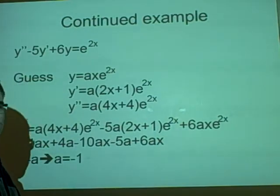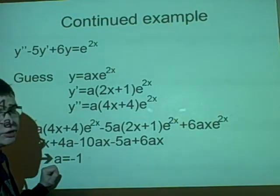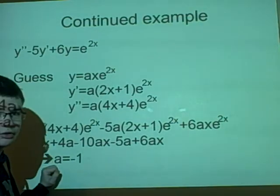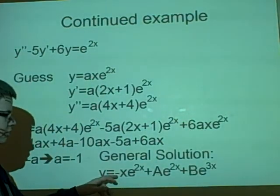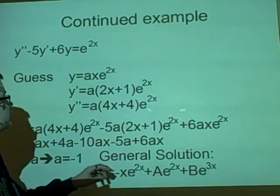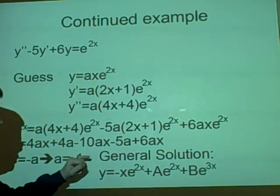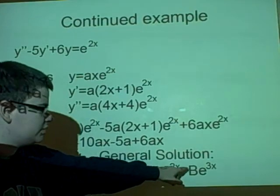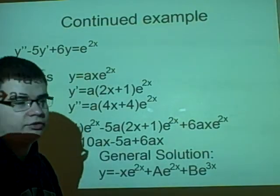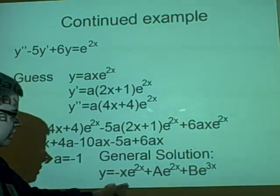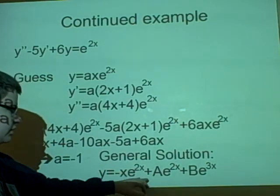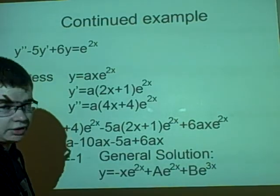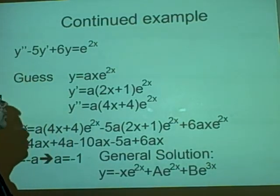So we have our first general solution as y=-xe^(2x). And because this is the same, solving it homogeneously, it's just the same, we'll get lambda equals 2 and 3. So our general solution is y=-xe^(2x), which is from here because we've got a as -1, plus Ae^(2x)+Be^(3x). Now you can simplify this a bit more and change this here so it could be A-x times e^(2x)+Be^(3x), if you wanted. But that's it.